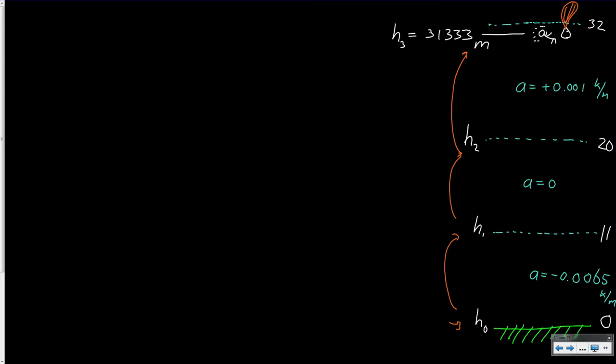So how do we do this? Let's start with the first layer, the troposphere, which starts at 0 kilometers and goes up to 11 kilometers. The gradient there is minus 6.5 Kelvin per kilometer, so in SI units it is minus 0.0065 Kelvin per meter. So let's start by first jumping to 11 kilometers.